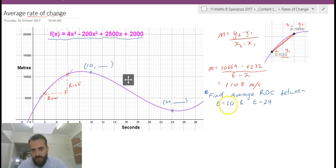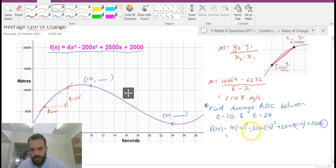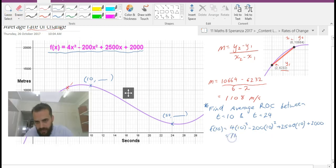So first I need to know what f of 10 is. Put that in your calculator, that gives us 11,000.